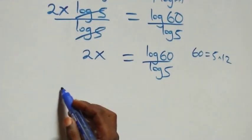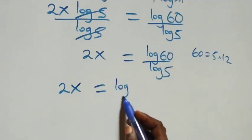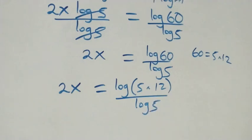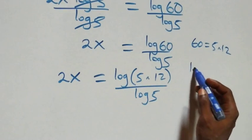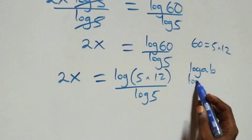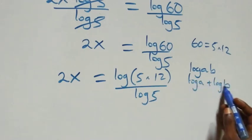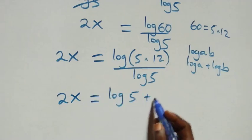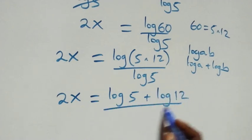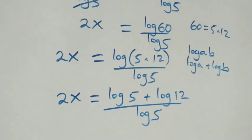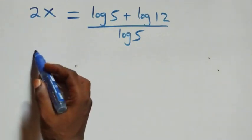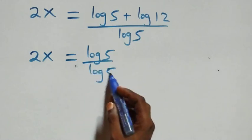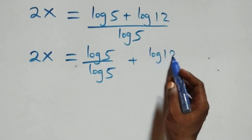Now 60 can be written as 5 times 12, so 2x equals log(5 times 12) over log 5. Applying log(ab) = log a + log b, this becomes log 5 plus log 12 over log 5. We then separate this into two fractions: 2x equals log 5 over log 5 plus log 12 over log 5.